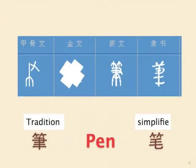Next word: pen. The original word looks just like holding a pen — the upper right part stands for the hand, while the left part is the bamboo stick. After a while, the symbol for bamboo was added to the top of the word, and it finally became the traditional form. The simplified form keeps the upper part but changes the lower part to mean a pen is made of bamboo and animal fur.